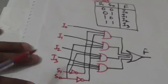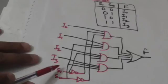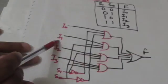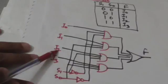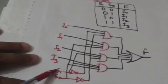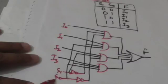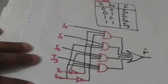Similarly, when S1=0 and S0=1, the value of F will be I1. When S1=1 and S0=0, the value of F will be I2. When S1=1 and S0=1, the value of F will be I3.